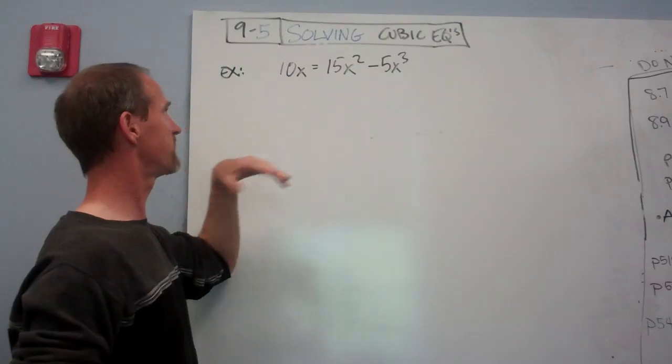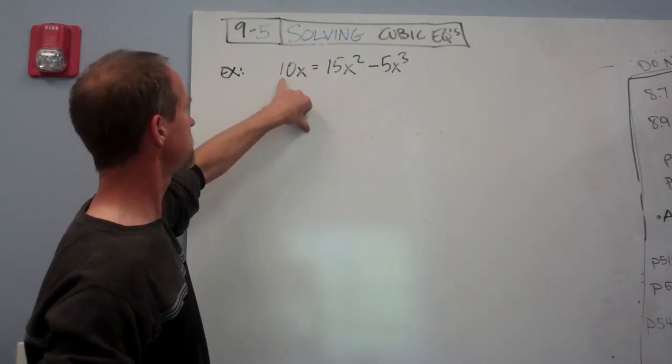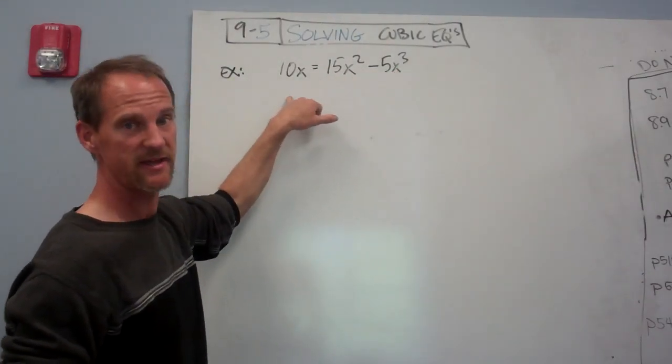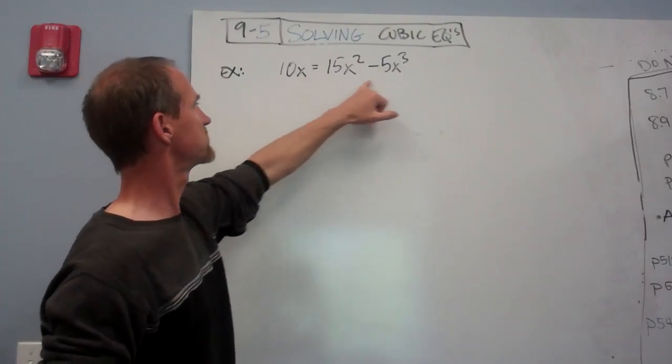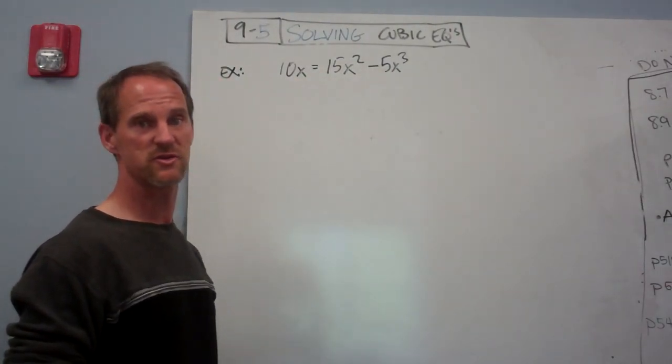You can find some of them often by guessing. You could try plugging in 1. If I plug in 1, that's 10. Then that's 15, and 15 minus 5 is 10. So we happen to know that a solution is x equals 1. And another one that's obvious is 0. If I plug in 0, that's 0 equals 0 minus 0. So there are two solutions.